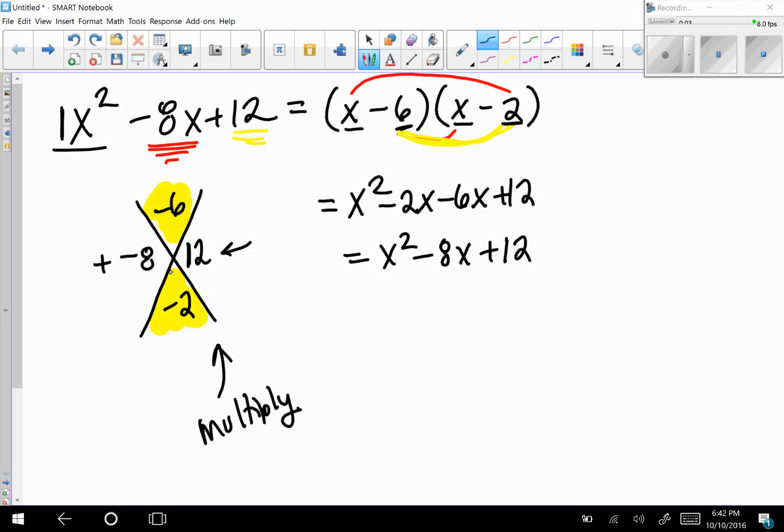To verify: the X means multiply, and your constant term goes here. Negative 6 and negative 2 add together to give negative 8, but multiply together to give positive 12.